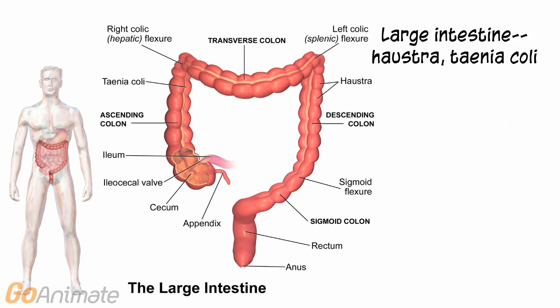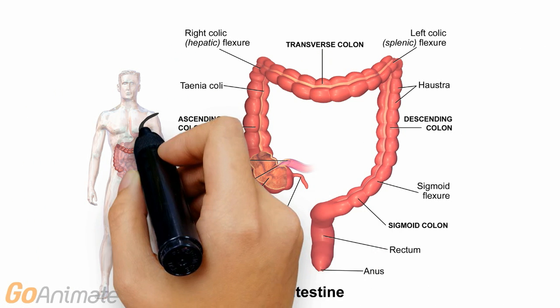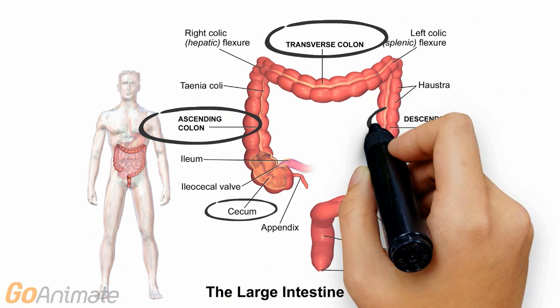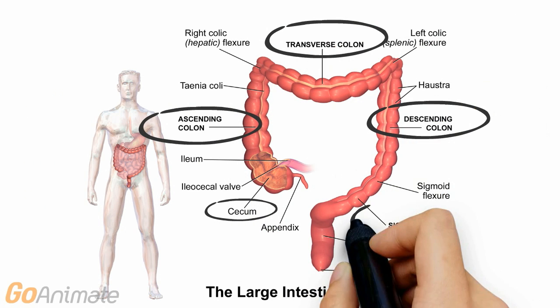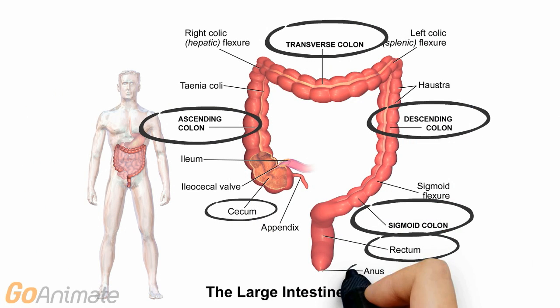The large intestine has a different structure than the small intestine. It contains large pouches called haustra and a long band of smooth muscle called the taenia coli. The major parts of the large intestine include the ascending colon, transverse colon, descending colon, sigmoid colon, rectum, and anus.